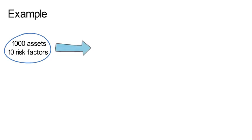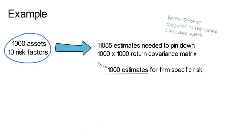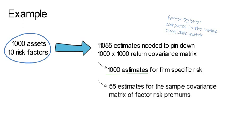Now let's put some numbers on the table to make it more tangible. For 1000 assets and 10 risk factors, one needs 11,055 estimates to pin down the 1000 times 1000 return covariance matrix. Now that's a lot, but it is still factor 50 lower compared to the sample covariance matrix. And the breakdown would be as follows. You need 1000 estimates for firm specific risk, 55 estimates for the sample covariance matrix of factor risk premiums, and finally, you need 10000 estimates for beta.